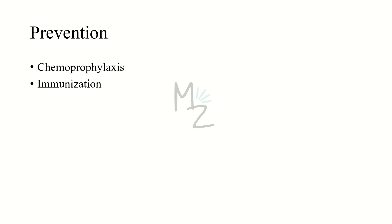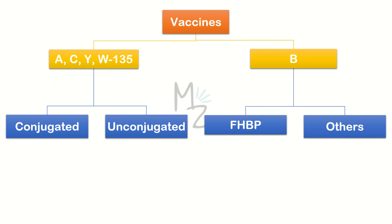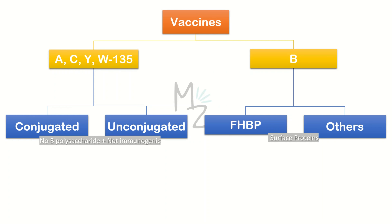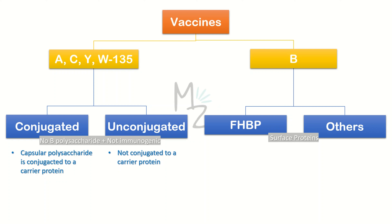Both chemoprophylaxis and immunization are used to prevent meningococcal disease. Vaccines against Neisseria meningitidis are classified into two groups: those working against ACYW-135 serotypes, and those working against serotype B. The ACYW-135 vaccines are further subdivided into conjugated and unconjugated vaccines. Serotype B vaccines are further classified into factor H binding protein vaccines and those using certain other surface proteins. The conjugated and unconjugated ACYW-135 vaccines have no B polysaccharide and are not immunogenic against serotype B, while the serotype B vaccines use surface proteins.